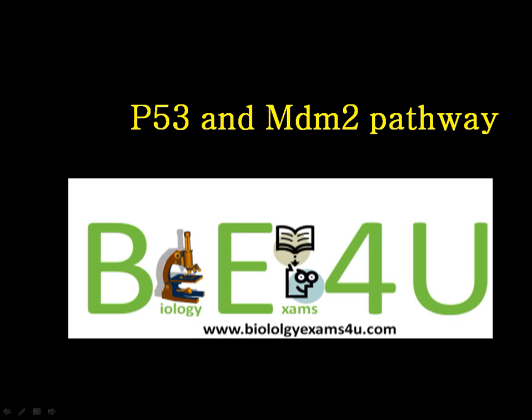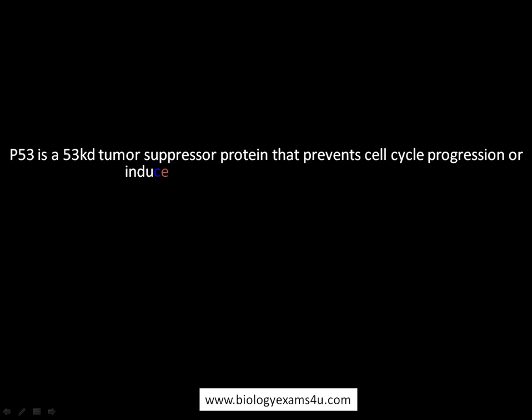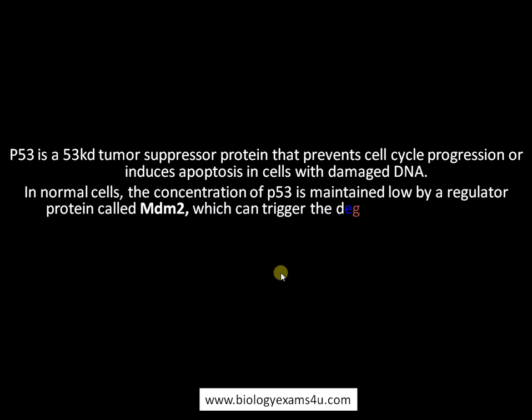In this tutorial we are going to discuss the interaction between p53 gene and MDM2 protein. p53 is a 53 kilodalton tumor suppressor protein that prevents cell cycle progression or induces apoptosis in cells with damaged DNA. In normal cells, the concentration of p53 is maintained low by a regulator protein called MDM2.